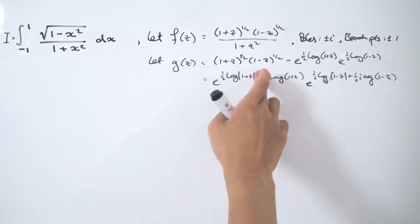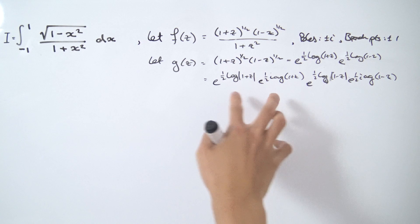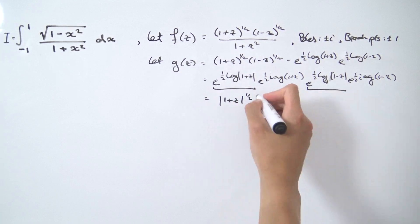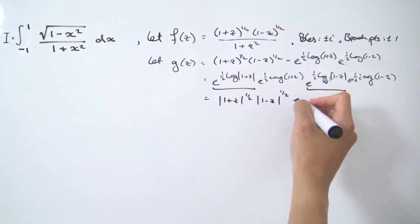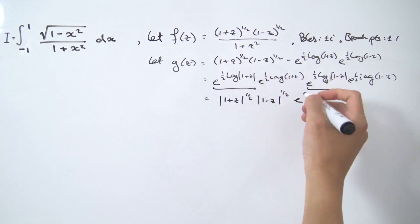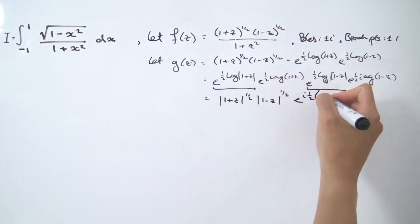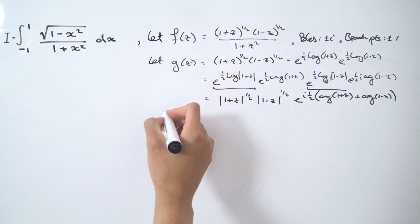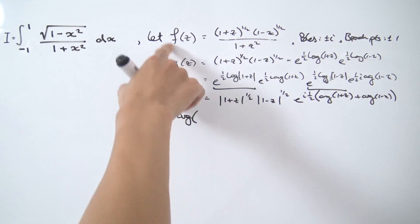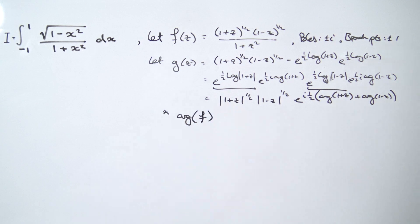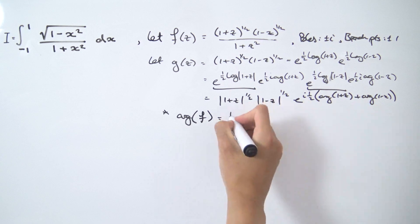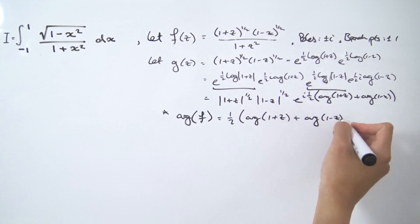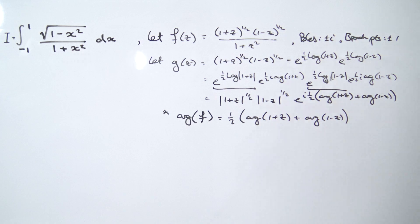We can split up the exponentials using exponential properties. The magnitude parts collapse back to (1+z)^(1/2) and (1-z)^(1/2). The remaining exponential factors give us e^(i/2 · [arg(1+z) + arg(1-z)]). So the argument of our function is (1/2) times [arg(1+z) + arg(1-z)]. This will be important when we study the branch cuts.